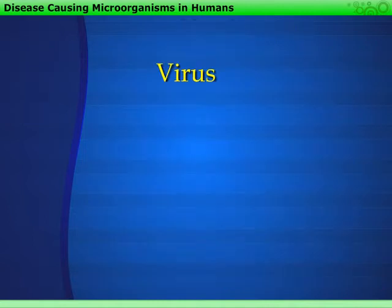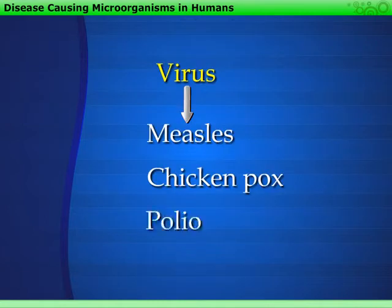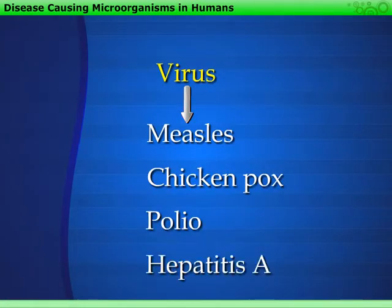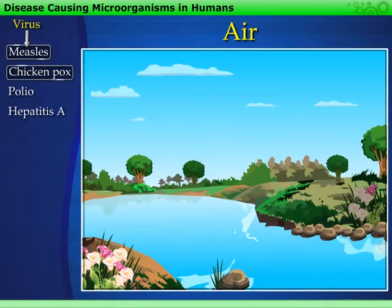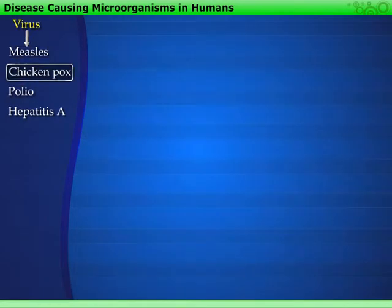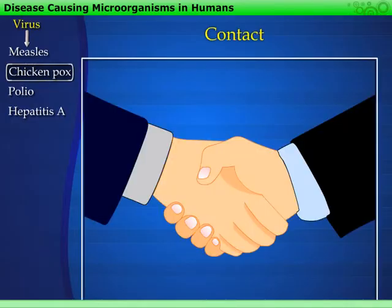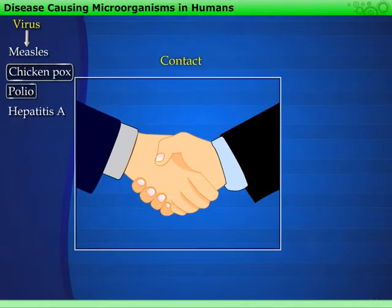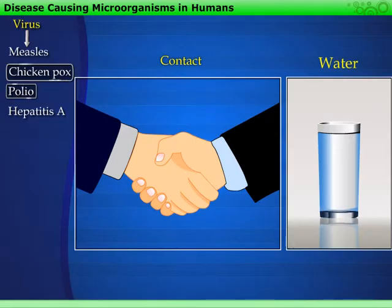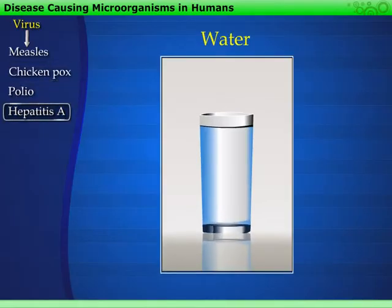Diseases caused by viruses are measles, chicken pox, polio and hepatitis A. Measles, chicken pox and polio spread through air. However, chicken pox can also spread through contact and polio through water. Hepatitis A spreads through water only.